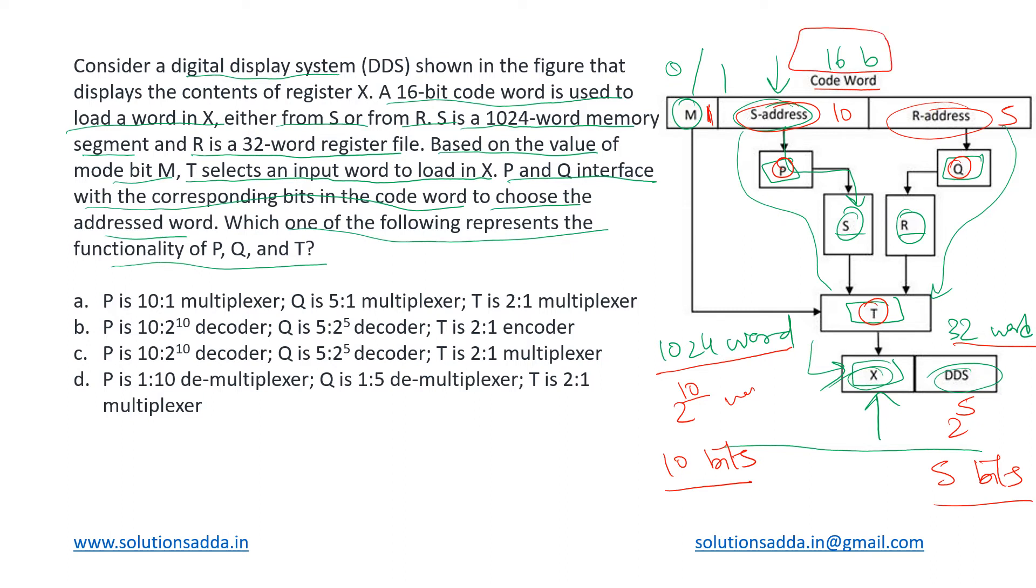So now among this S address and R address, what are this P and Q doing? They are acting as an interface. What that will be doing? It will be choosing one out of these 2 to the power 10 bits, 2 to the power 10 words, and giving it out to S. Similarly this Q will be giving out to R.